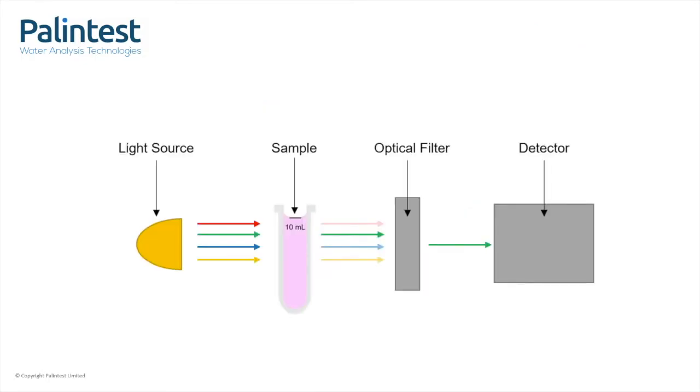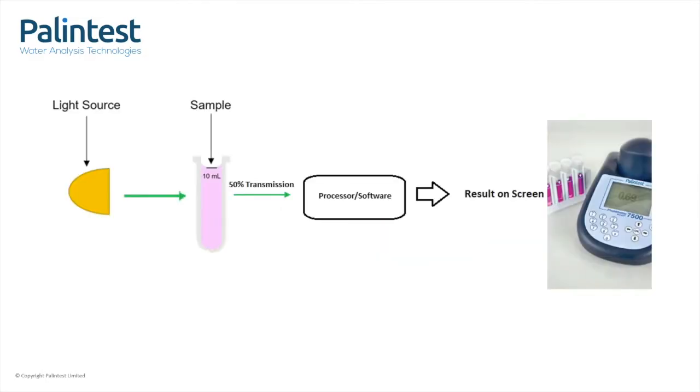To explain what a check standard is, I need you to recall how earlier Hannah explained how a photometer shines light through the sample and measures the percentage of light being transmitted through it. It then uses its internal software to convert that percentage of transmitted light into your result.